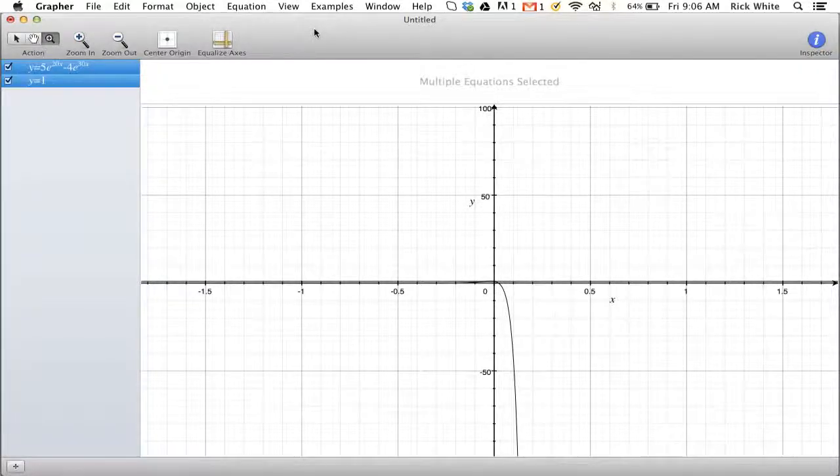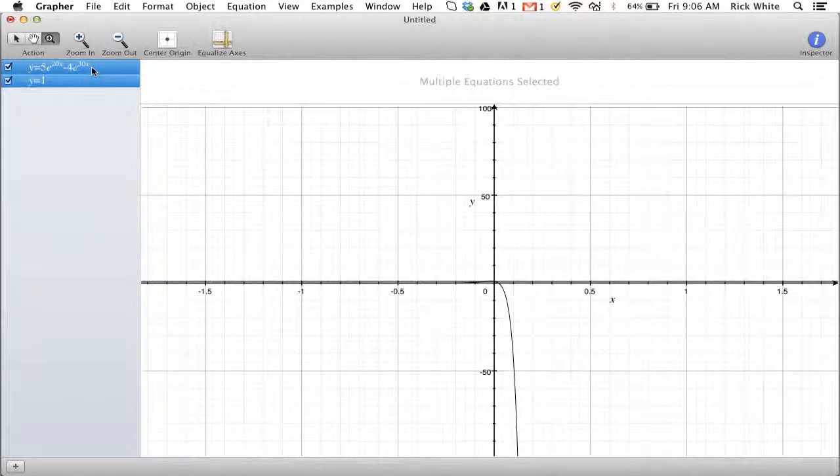Hey, if you get to a situation in which you have three equations and three unknowns, and Wolfram Alpha is giving you some difficulties, what you might want to do is jump over to Grafer, and Grafer can help you find those things.